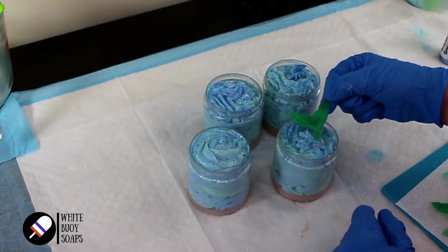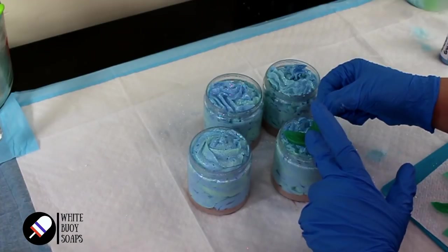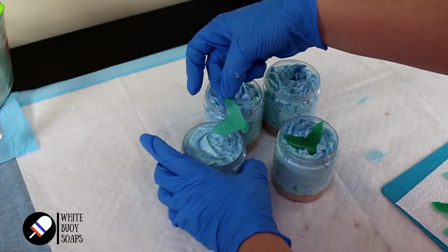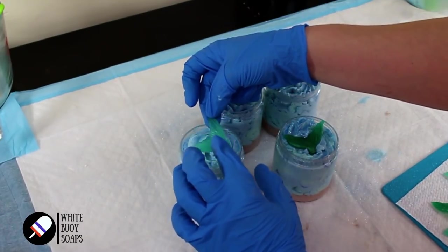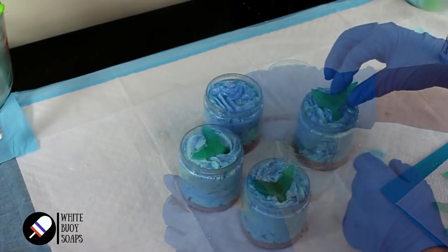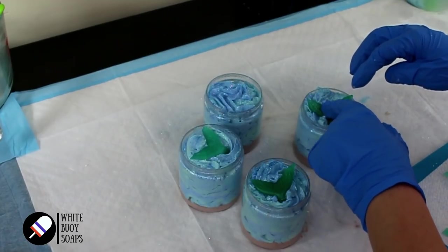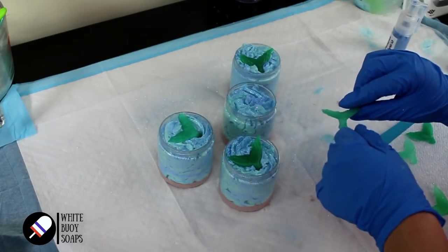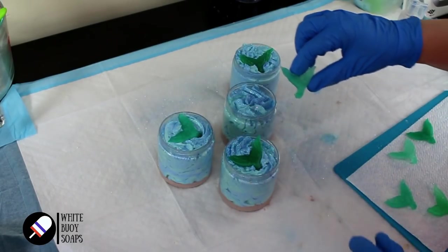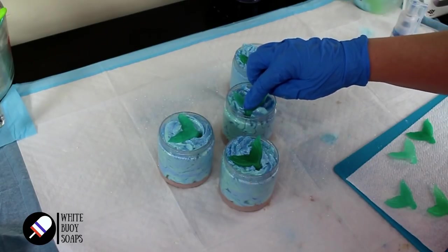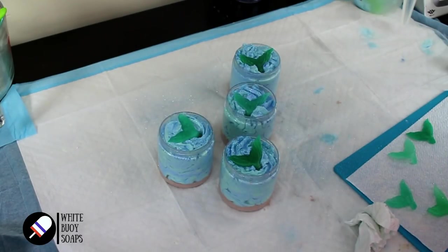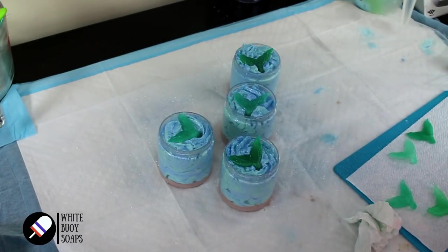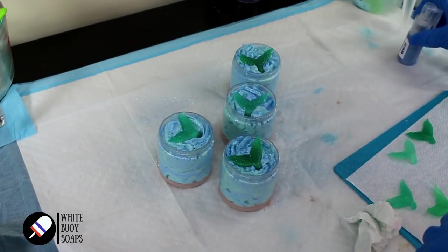And now I'm going to nestle one of these just right down in the top. Let's do this beauty. I'm just turning these around, spinning them to sort of put them in at the right spot. One more little puff of glitter. Yeah, this is biodegradable glitter, so don't come for me in the comments.